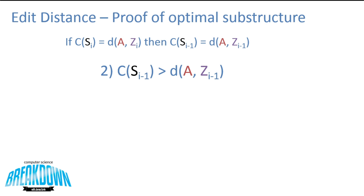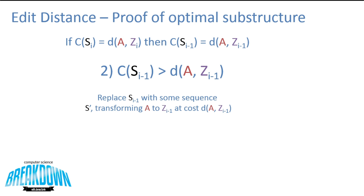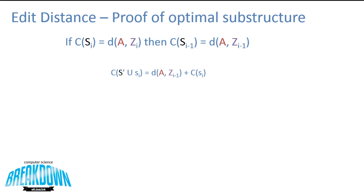Case 2: the cost of s at i minus 1 operations is greater than the distance from a to z at i minus 1. If this sequence costs more than the distance, we can replace it with some other sequence s prime that transforms a to z at i minus 1 at the cost of the distance from a to z at i minus 1. We can then append operation s at i to s prime, which transforms a to b at cost s prime union s at i. The cost of s prime union s_i equals the distance from a to z at i minus 1 plus the cost of s at i.